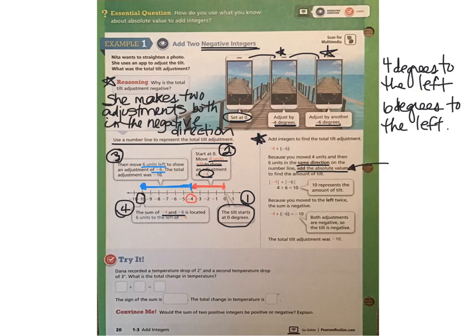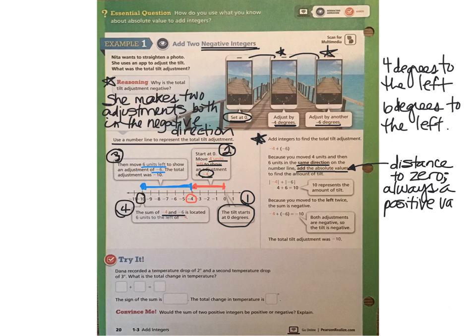So we're looking for the total amount that they're moving in the negative direction, since both integers are negative. Well, remember, absolute value shows us a distance, and distance is always positive. And the distance that absolute value tells us about is the distance to zero on that number line. And distance is always a positive value. So in this case, negative 4 and negative 6 both are 4 and 6 units respectively from zero. So adding those two integers together, 4 and 6 to get 10, 10 represents the amount of tilt. But now we need to decide, why is that answer negative? Well, we moved to the left twice, so that sum is negative because we kept going in the negative direction. So negative 4 plus negative 6 is a negative 10.